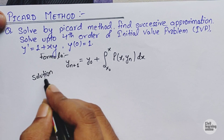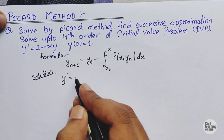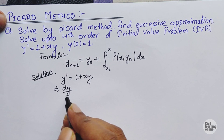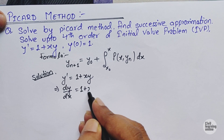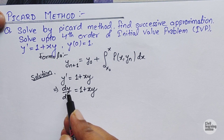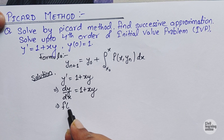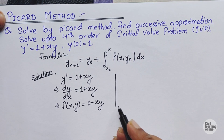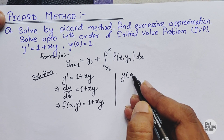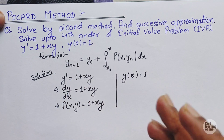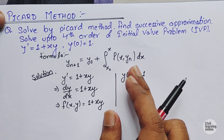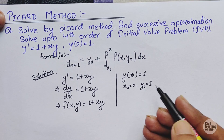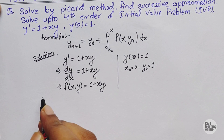Now let us rewrite the equation. We have y dash equals to 1 plus xy, which can be written as dy/dx equals 1 plus xy. So f(x, y) equals 1 plus xy. We are also provided with the boundary condition: y(0) equals 1. So y-naught equals 1 and x-naught equals 0.